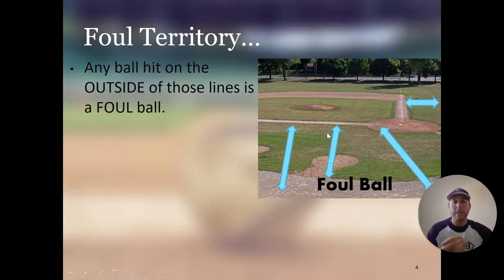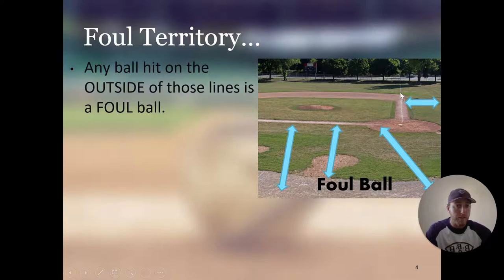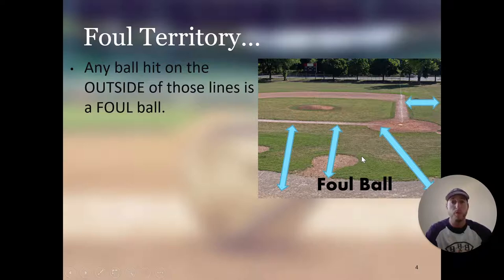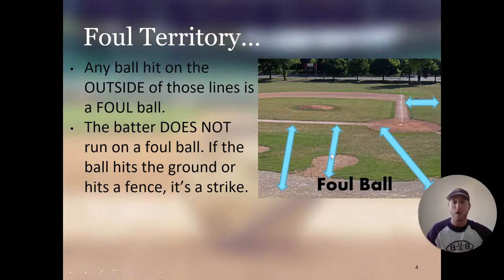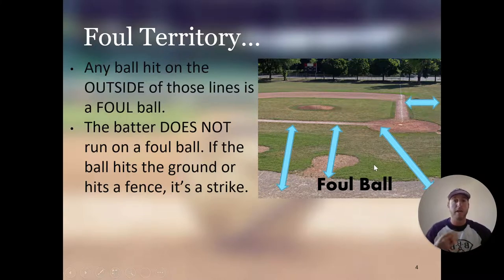Foul territory — this is a great example of a field that has a bunch of foul territory. As you can see, the line we just looked at is right here on the third baseline, and there's home plate, and the first baseline goes all the way down to the right field line. Everything over here where the blue arrows are — that is all foul territory. Any ball hit on the outside of those lines is a foul ball. The batter does not run on a foul ball. If the ball hits the ground or hits a fence like the dugout fence, that's just a foul ball and it gets treated like a strike.